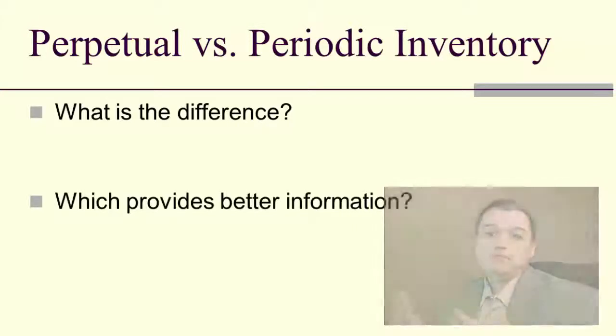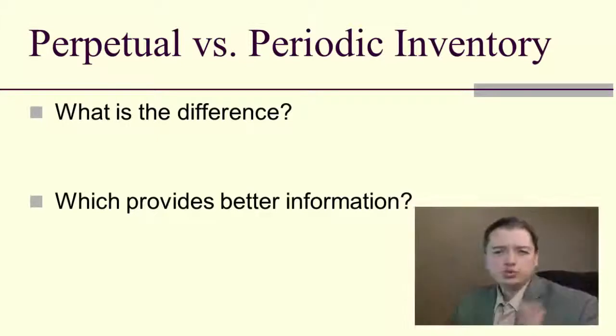In the periodic system, you go through and you calculate everything you've purchased, and then you subtract what you've got left, and whatever isn't there must have been sold. At least that's the assumption that you make. So which one's more accurate? The perpetual system's more accurate. I can keep track of everything as it goes in and out of my business. That's much more accurate than just a guess at the end of the period. One of the things specifically that a periodic system leaves out is what we call shrinkage. Shrinkage is things that get stolen, or spoiled, or misplaced, or lost, or whatever, over the course of the period.